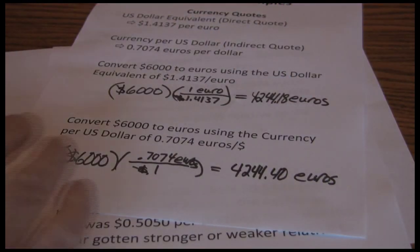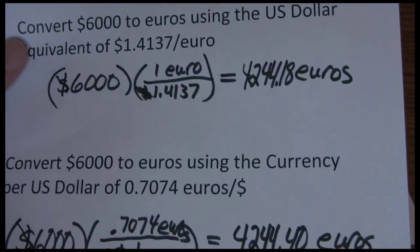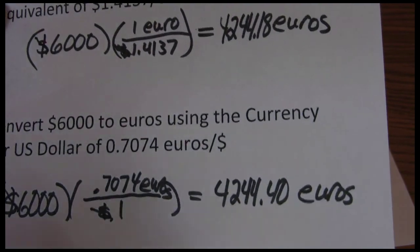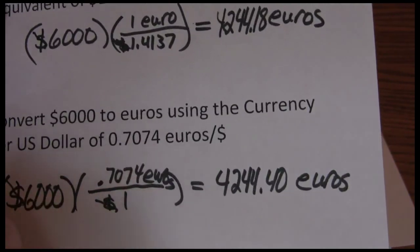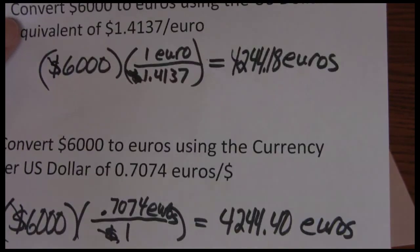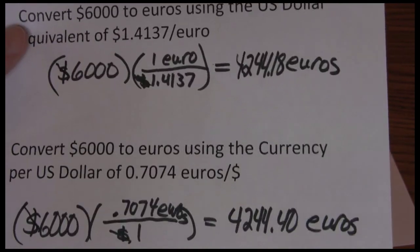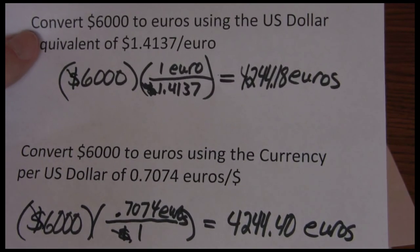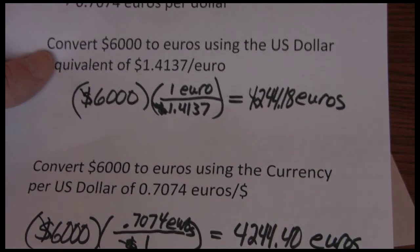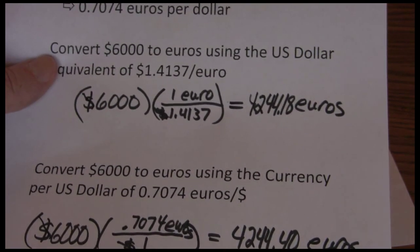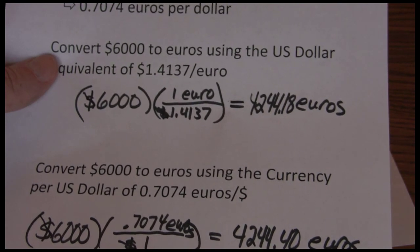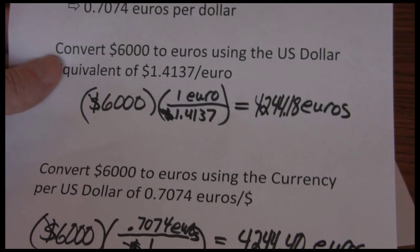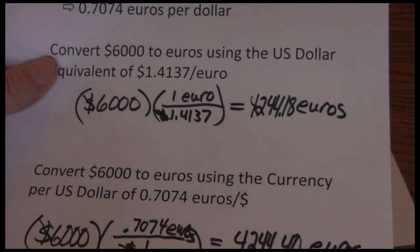Notice that the two answers are essentially the same: 4,244.18 euros versus 4,244.40 euros — the only difference is a rounding error. If I had carried the exchange rates out to eight or nine decimal places, the answers would have been exactly the same, because the exchange rate is the same. The same process is used to convert euros back to dollars — you just ensure the euros cancel out, with euros in the denominator and dollars in the numerator.